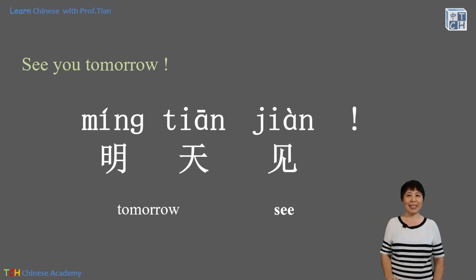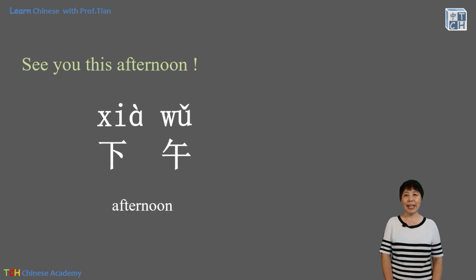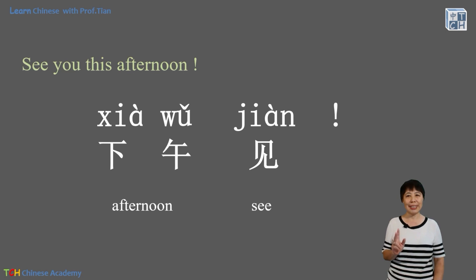How about 'see you this afternoon'? The time expression goes first: 下午, which means afternoon, and then 见. So it's 下午见. There's no need to say 'you' because we all know we are seeing each other.